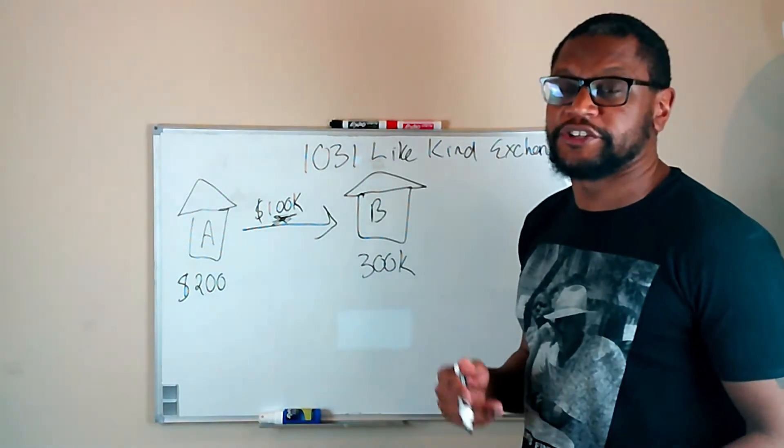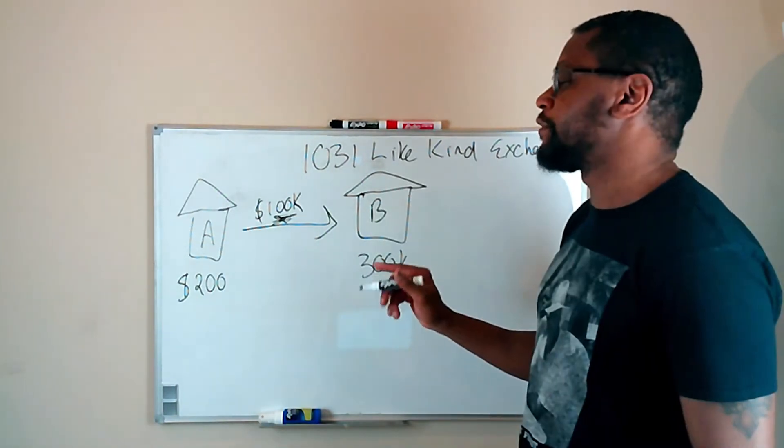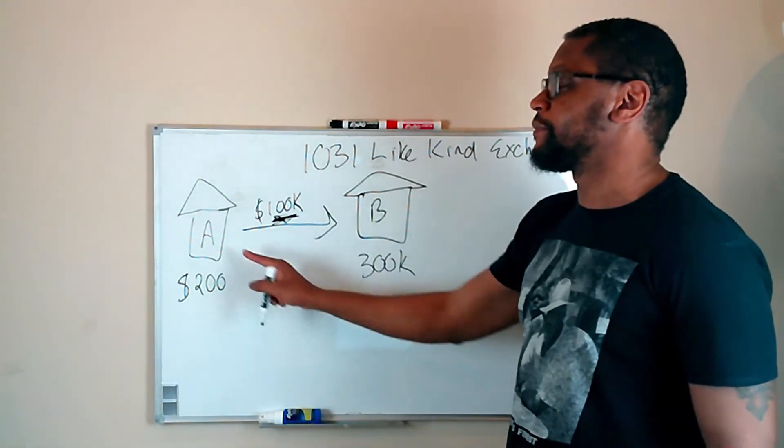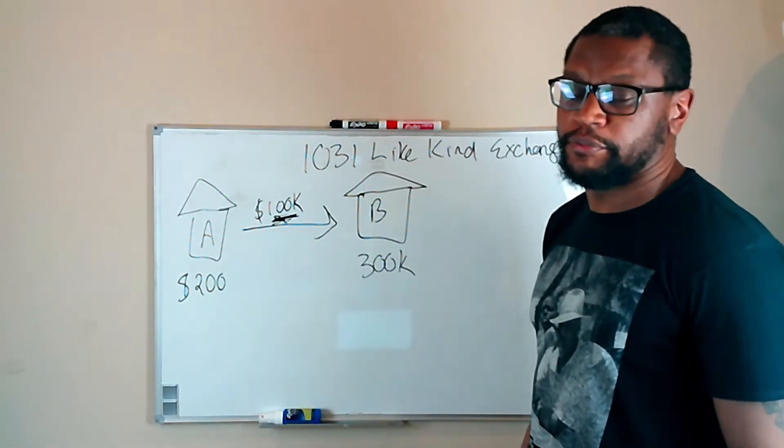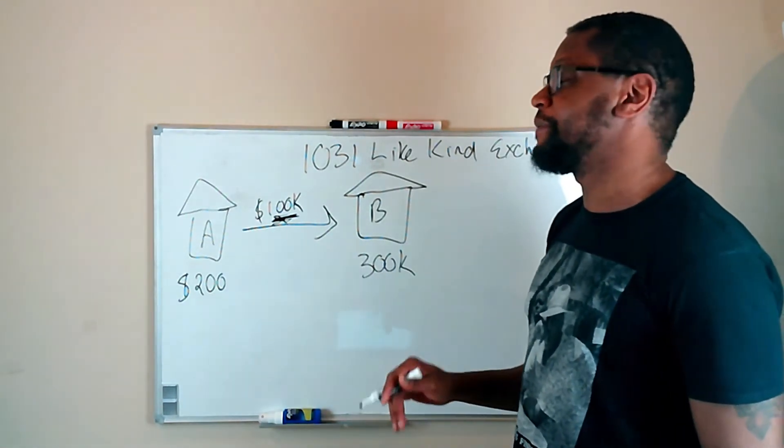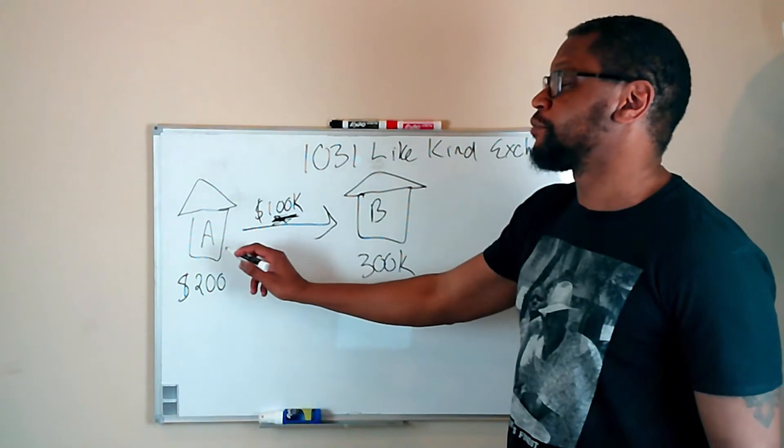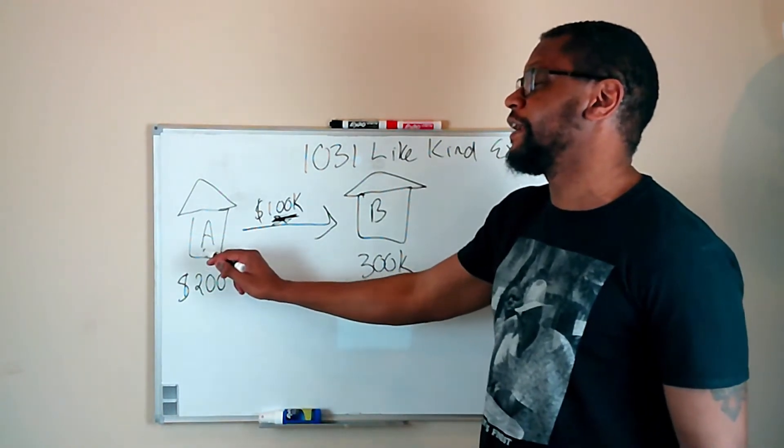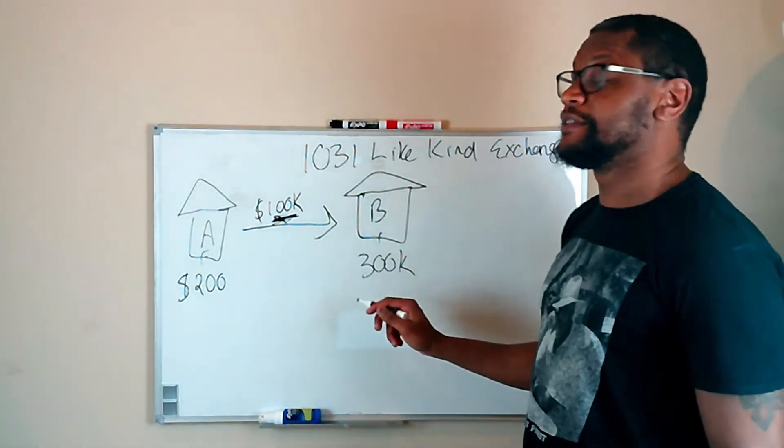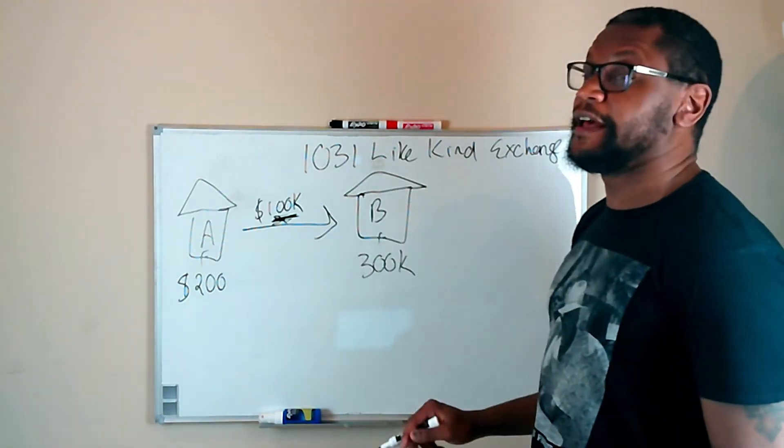Now, there are some things you have to understand about a 1031 exchange. First, it's a way to avoid paying capital gains tax on any profits from the sale of a rental property. The second thing is you have to hold the property in the same name. So if I own this property under Debt Free Dad LLC, when I purchase this property, it has to be held under the same name, Debt Free Dad LLC.